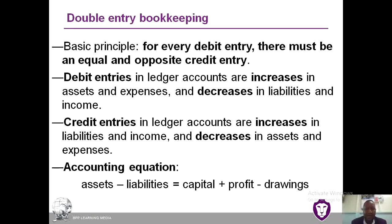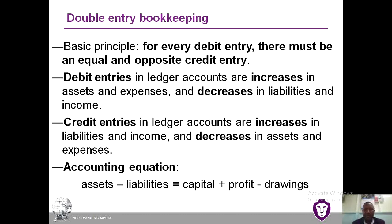Now let's come to the issue of double entry, which is also covered in FA1, so I'll do a summary. The basic principle of accounting is that to every debit entry, there must be an equal and opposite credit entry. Debit entries in ledger accounts arise when there is an increase in assets and an increase in expenses. Every increase in liability and every increase in income should be credited.